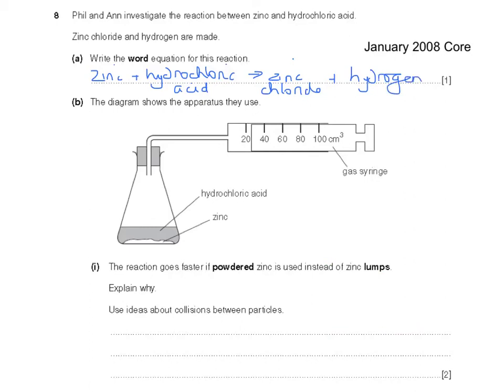The diagram shows the apparatus they use. So here we have the zinc as the metal, as the solid reacting with hydrochloric acid in the flask, and this would produce hydrogen which would go along the delivery tube and into the gas syringe. Now, the reaction goes faster if powdered zinc is used instead of zinc lumps. Explain why using ideas about collisions between particles.